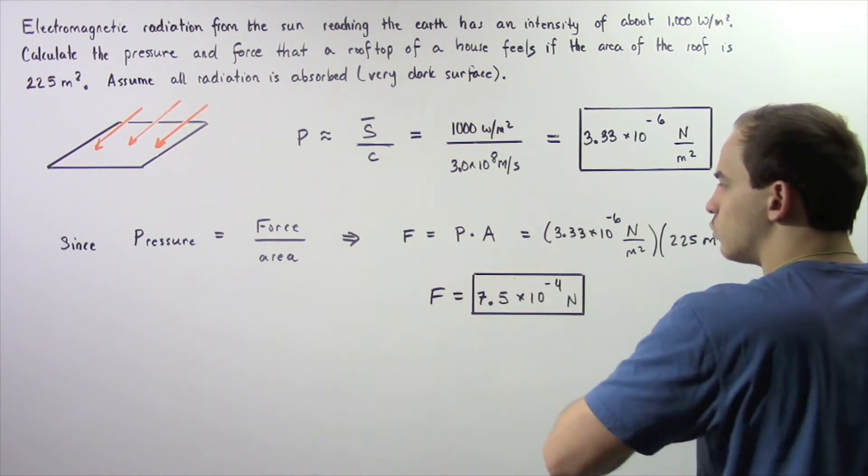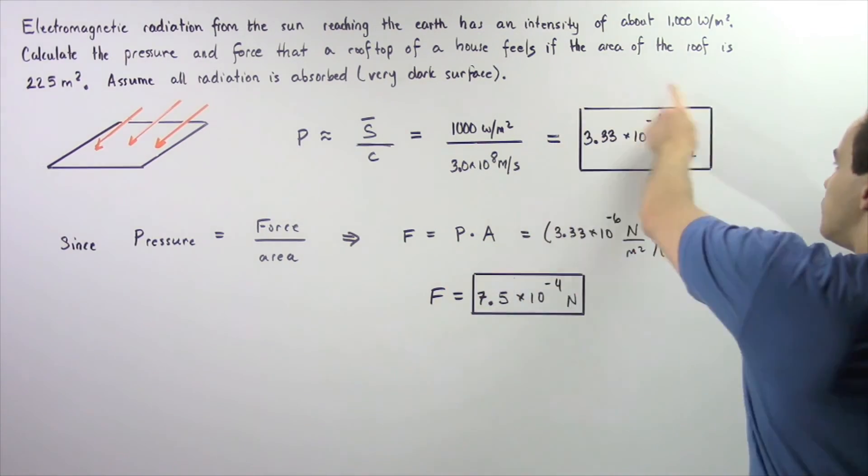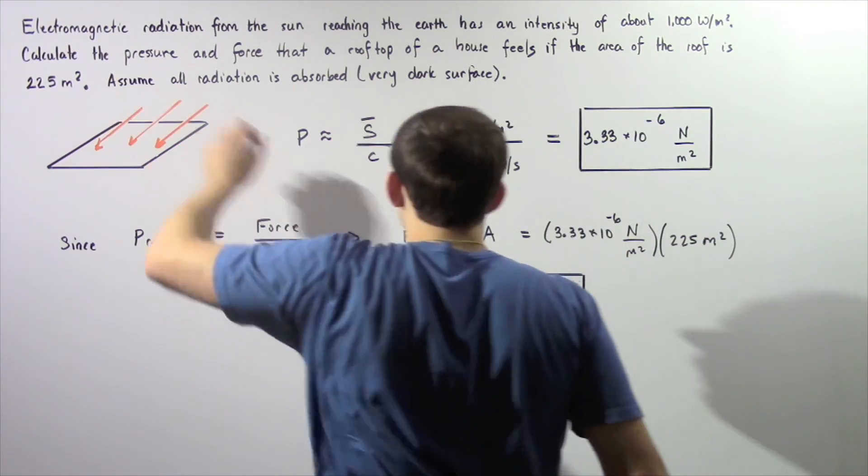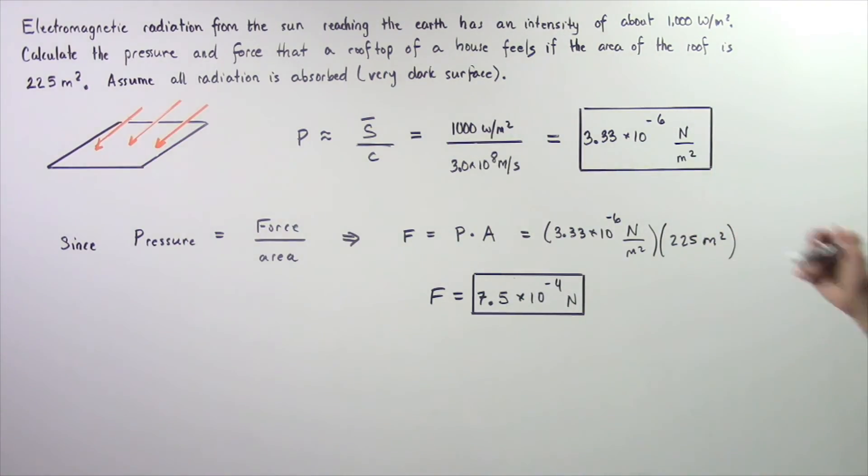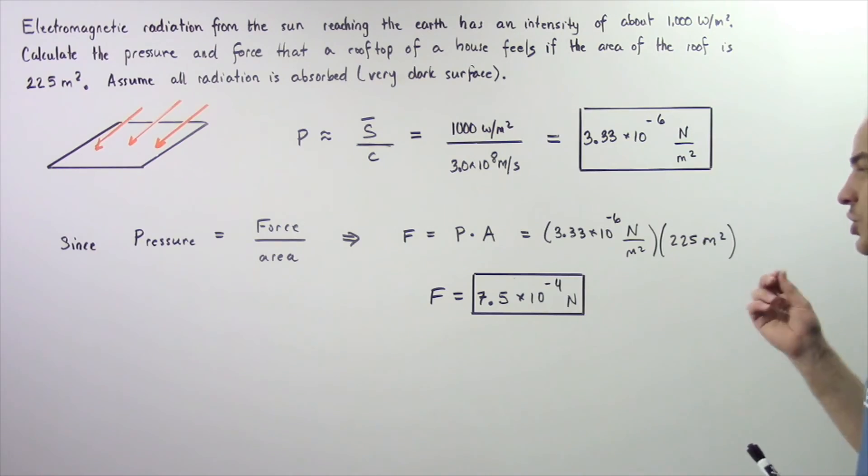The pressure, 3.33×10⁻⁶ N/m², multiplied by the area of 225 meters squared gives us a value of about 7.5×10⁻⁴ newtons.